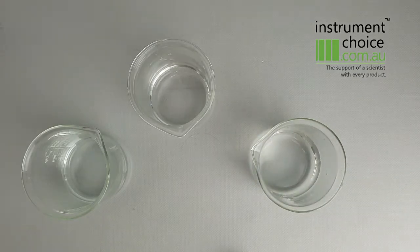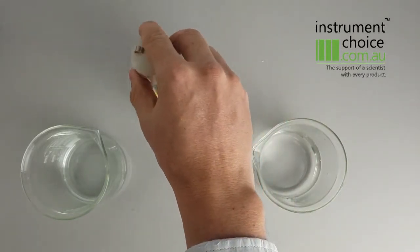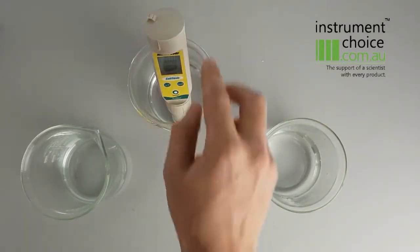Once you've removed it, give it a good shake off so it's relatively dry. Then give it a good stir with distilled water, which is what we've got in this middle beaker.